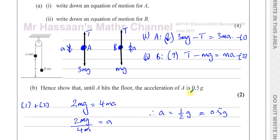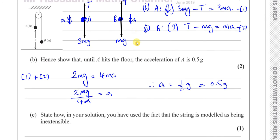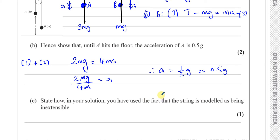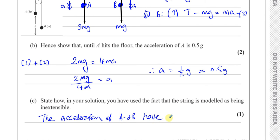So the acceleration of A is 0.5G. That is also the acceleration of B — not exactly the same direction, since one is up and one is down, but they have the same magnitude. This is how we used the fact that the string is inextensible: the accelerations of A and B have the same magnitude because they are connected by an inextensible string.